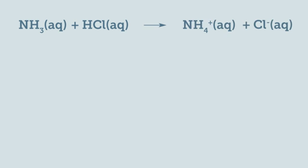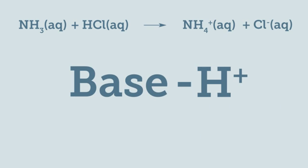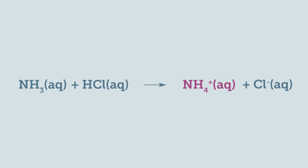When ammonia reacts with a strong acid such as hydrochloric acid, it is fully protonated to form ammonium and chloride ions. When a base receives a proton, we call the species formed the conjugate acid of that base. In this example, the ammonium ion is the conjugate acid of ammonia.